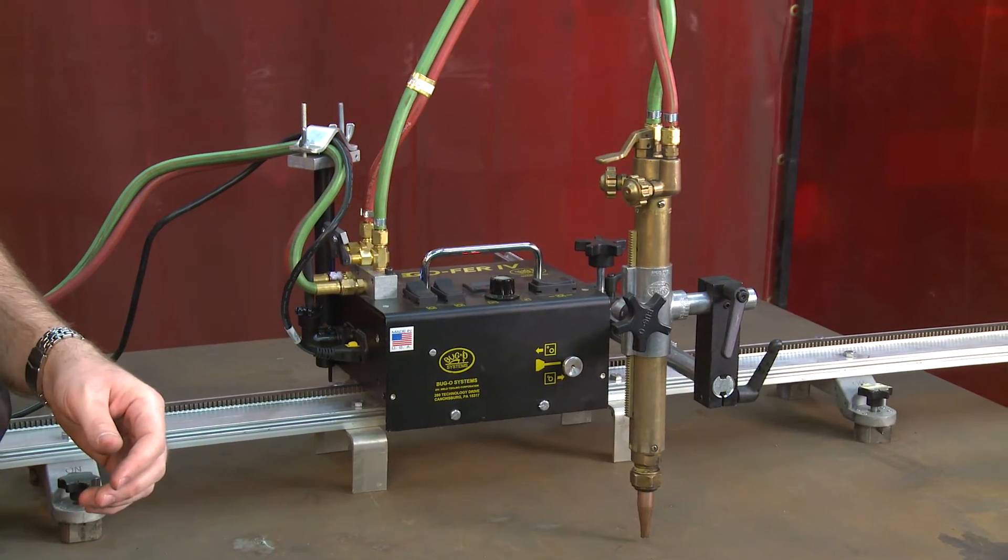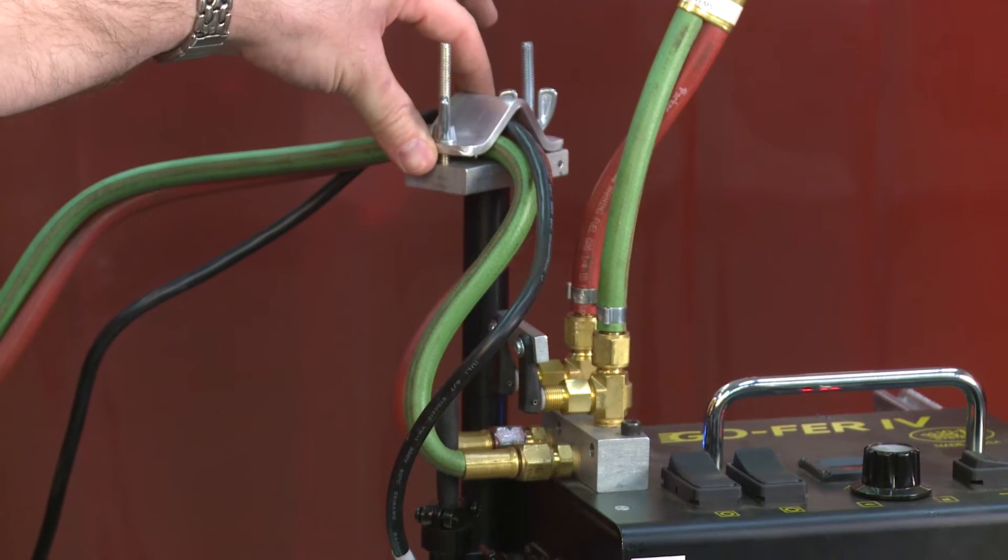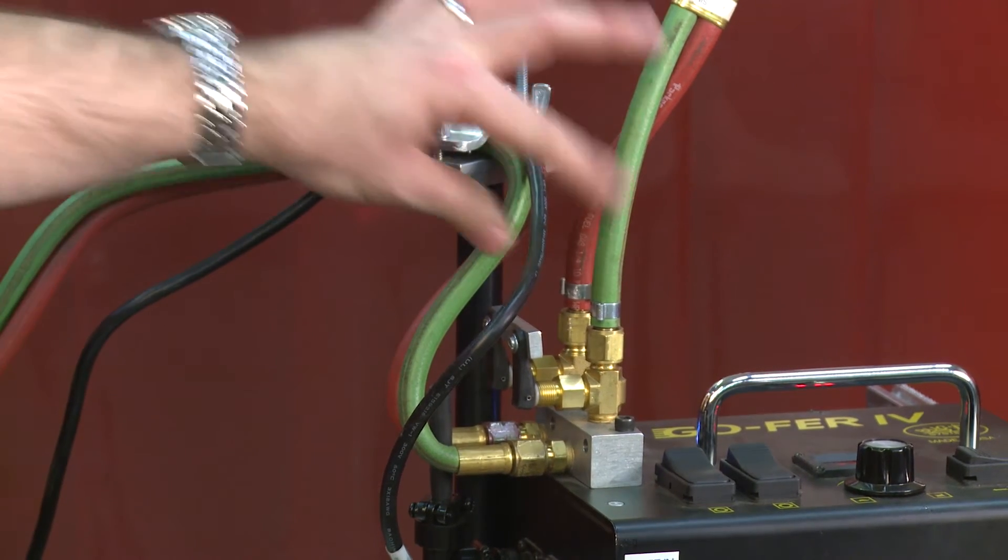As you can see, now we have the Gopher 4 set up for standard oxy-fuel cutting. The machine also comes standard with a cable anchor to provide strain relief for your gas hoses and your power cord.